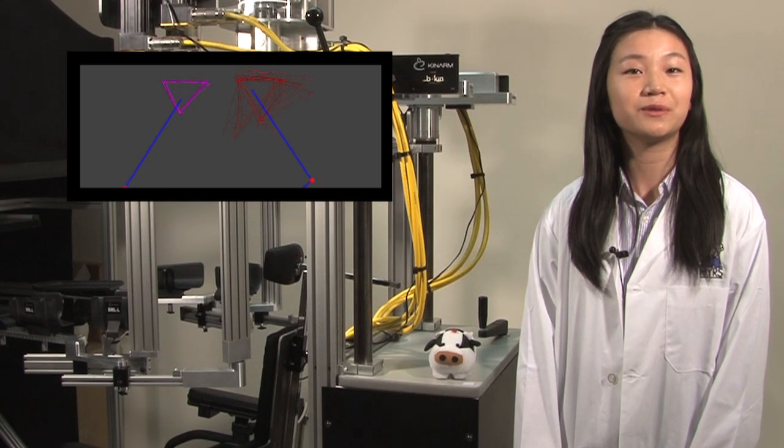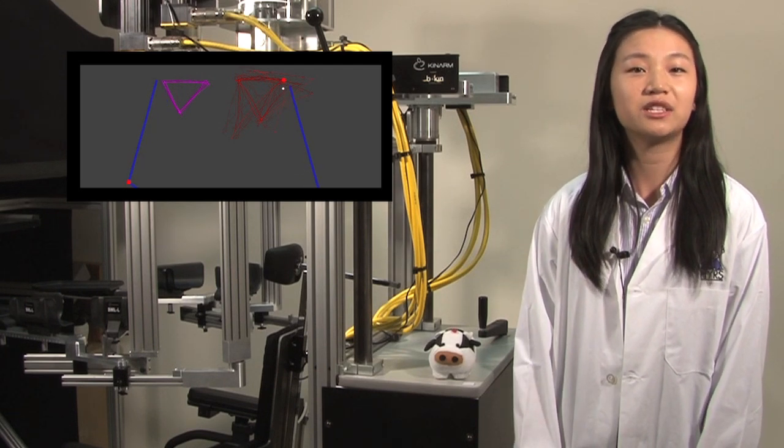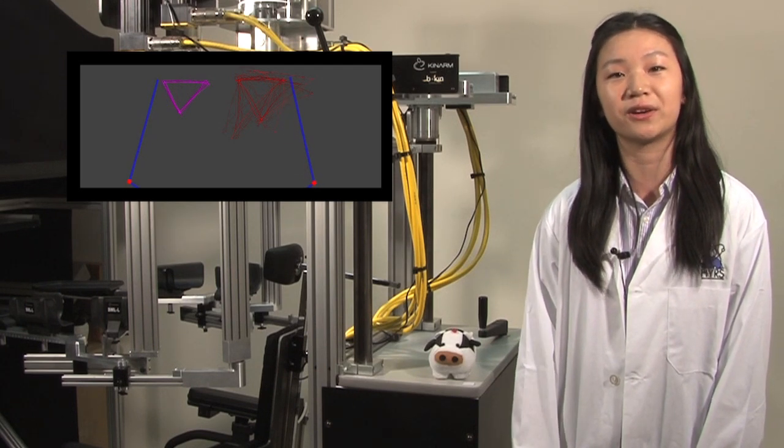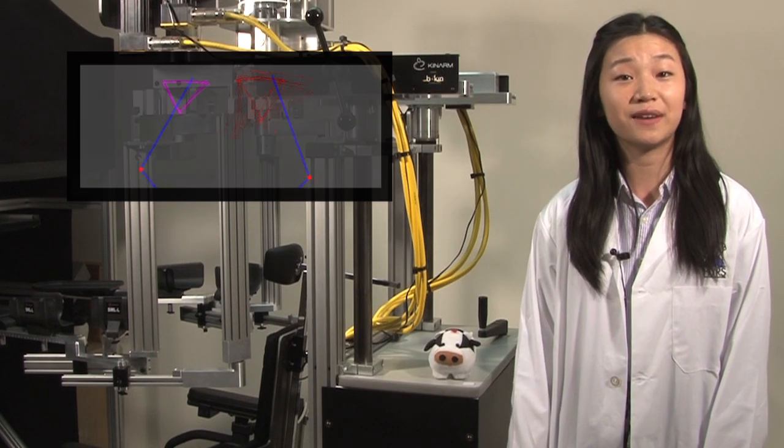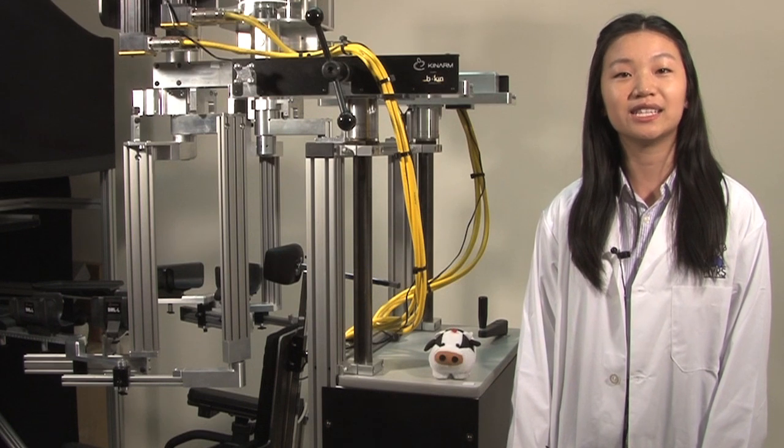The robot moves one of the subject's arms and the subject must rely on proprioceptive information from that arm to mirror the position and movement of the other arm. I am testing the effects of muscle tendon vibration on proprioceptive information as measured by the kinarm.